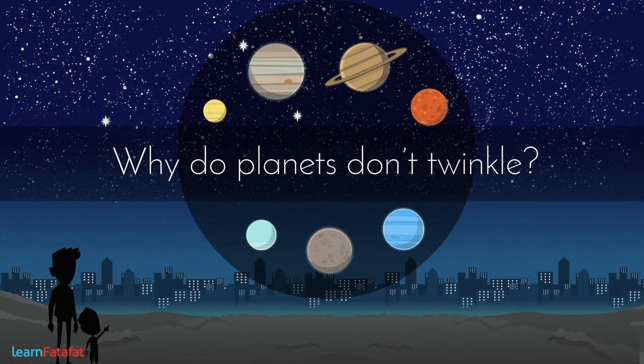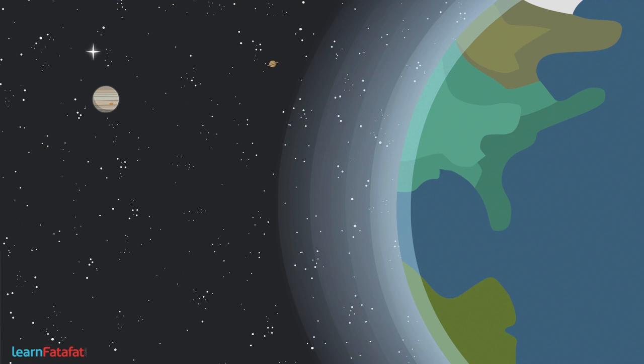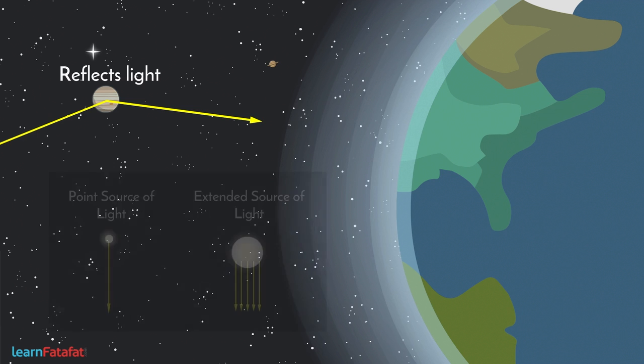Why do planets not twinkle? The reason is simple. Planets are much closer to Earth. They reflect light falling on them towards us. Since planets are much closer to Earth, they cannot be considered as point sources.